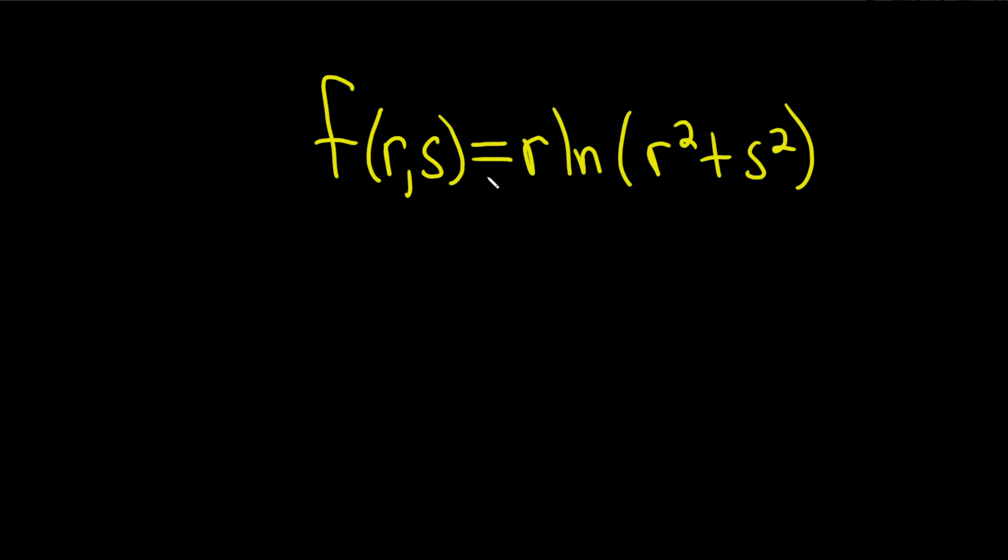Find the partial derivative of this function with respect to r. So we're looking for del f, del r. You'll notice that there's an r here, and there's an r inside the natural logarithm.